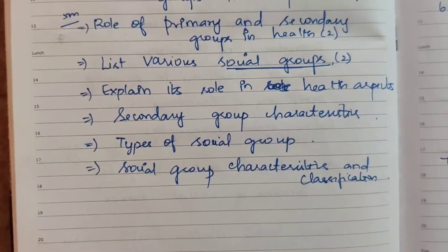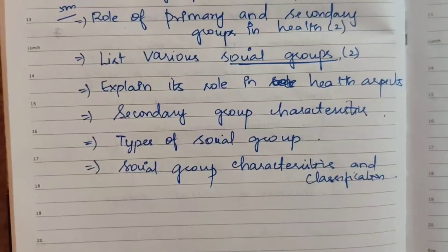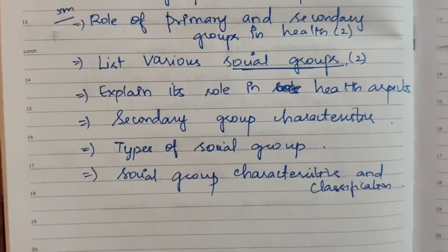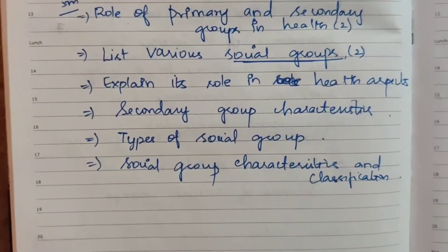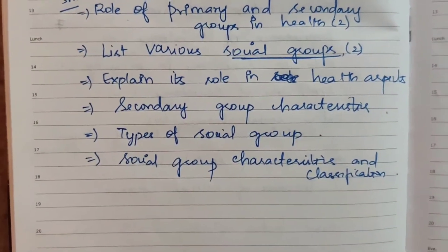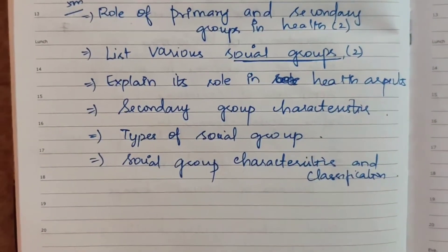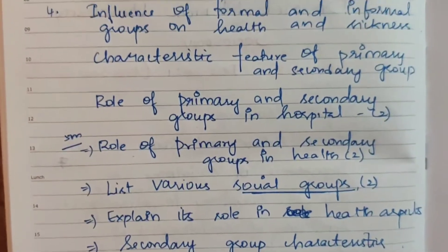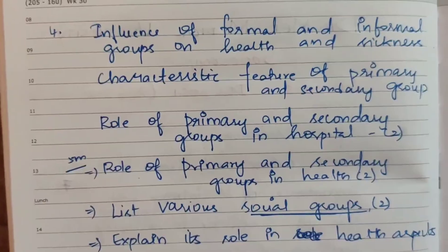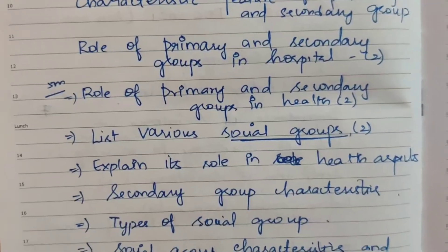Types of social groups, for 5 marks, also lists various social groups — similar question. Social group characteristics and explanation form one core topic, but it appears in different question formats, so you need a solid understanding.